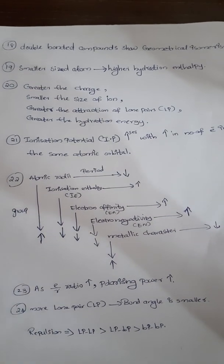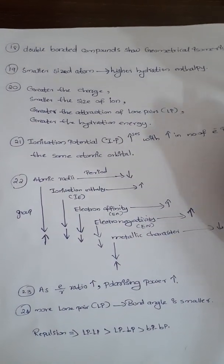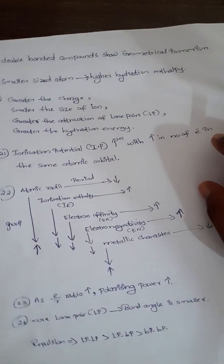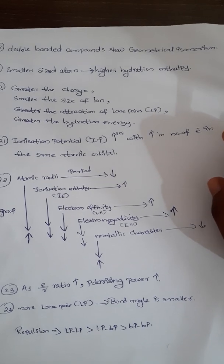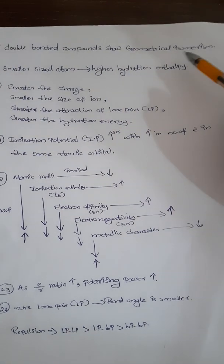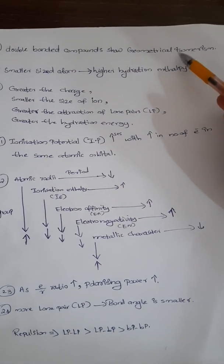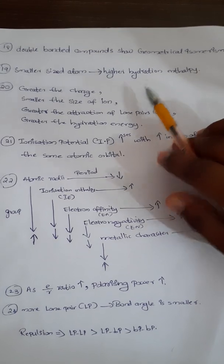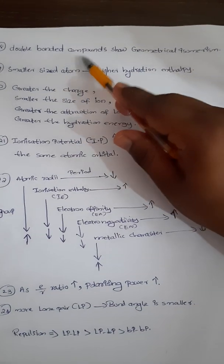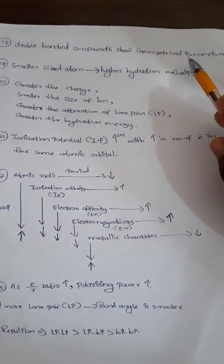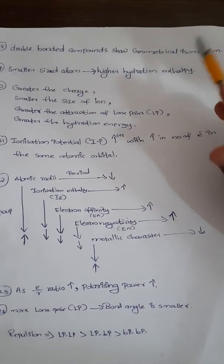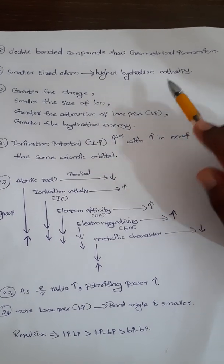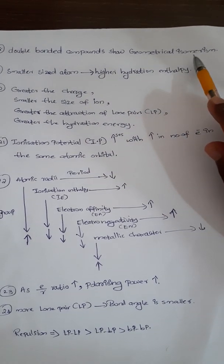Next point: double-bonded compounds will show geometrical isomerism. We know that there are different types of isomerism, like geometrical isomerism and optical isomerism, but double-bonded compounds will show geometrical isomerism.